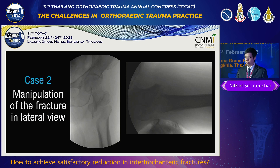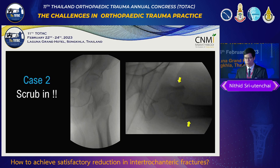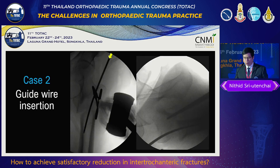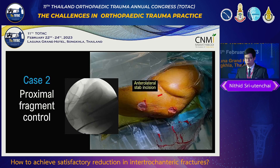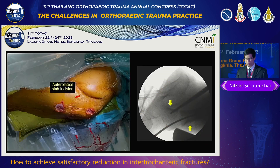I tried to manipulate the fracture and luckily it was still mobile, so I decided to scrub in and planned to use a percutaneous technique first. I used a Kocher clamp to control the proximal fragment through an anterolateral mini incision — the same incision used when placing a Schanz pin for an external fixator. I used the Kocher clamp because it is a simple instrument readily available in the set.